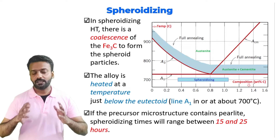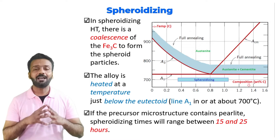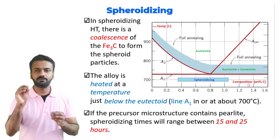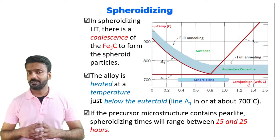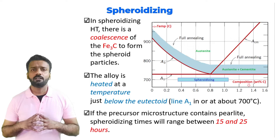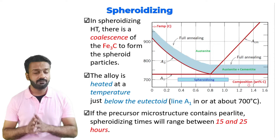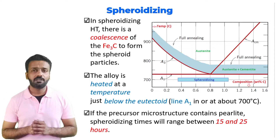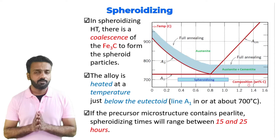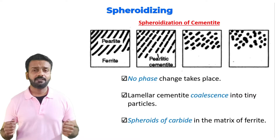In spheroidizing, we heat the material just below the A1 line — so there is no phase change — but what happens is the iron carbide particles come together and form sphere-like structures. We have these spheroid particles in a matrix of ferrite throughout. In spheroidizing heat treatment there is a coalescence of Fe3C particles to form spheroid particles. The alloy is heated at a temperature just below the A1 line, around 700°C, and held for around 15 to 25 hours to allow the material to form these spheroid particles.